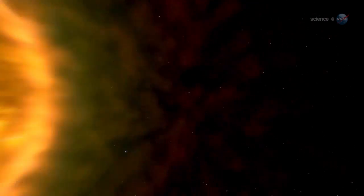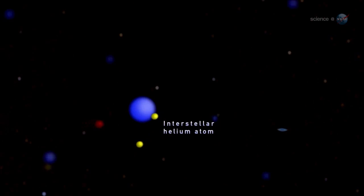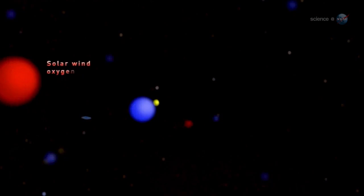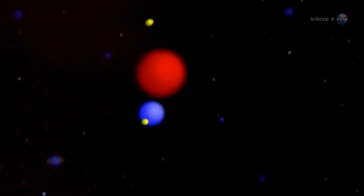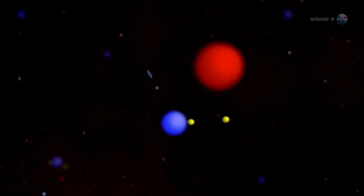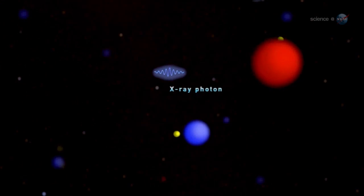Charge Exchange. Basically, it happens when the electrically charged solar wind comes into contact with a neutral gas. The solar wind can steal electrons from the neutral gas, resulting in an X-ray glow that looks a lot like the glow from an old supernova.